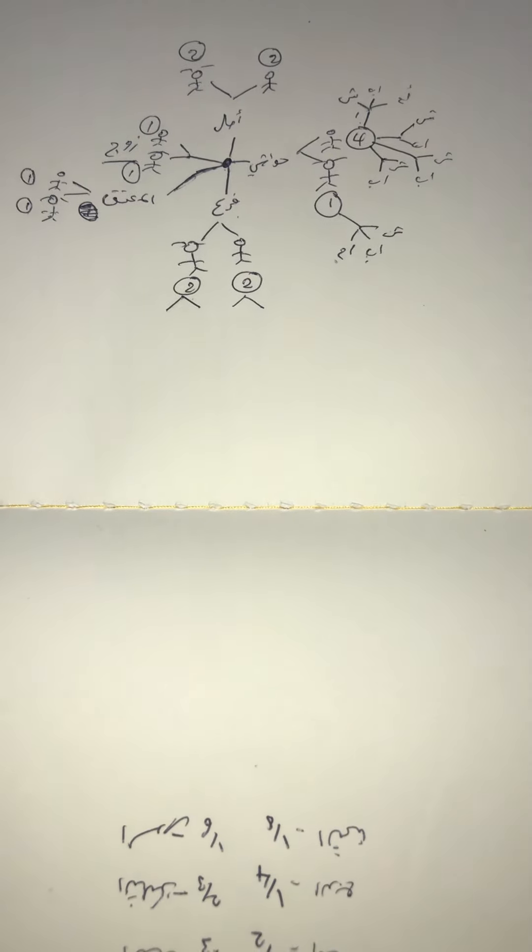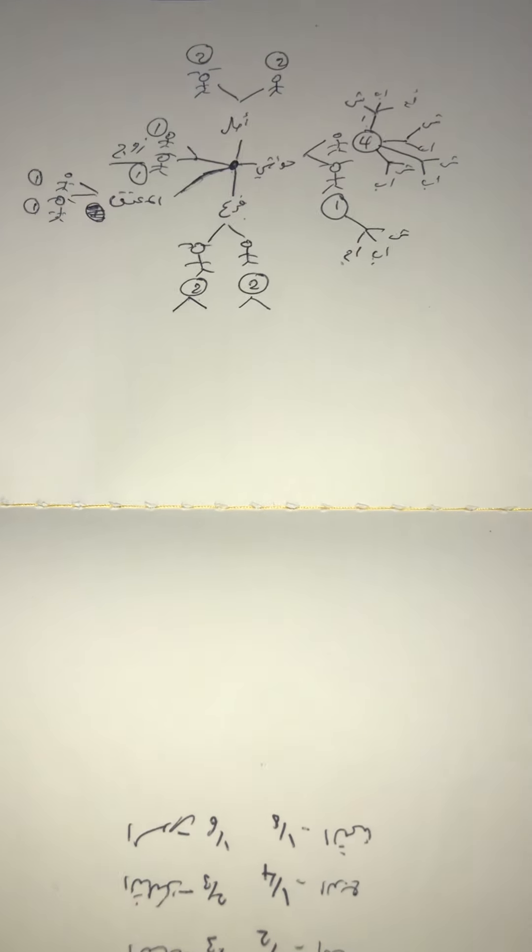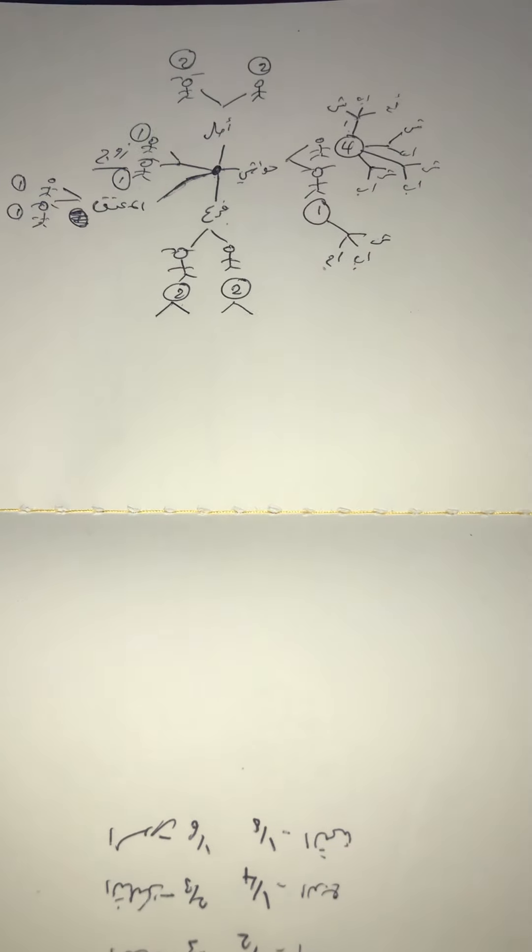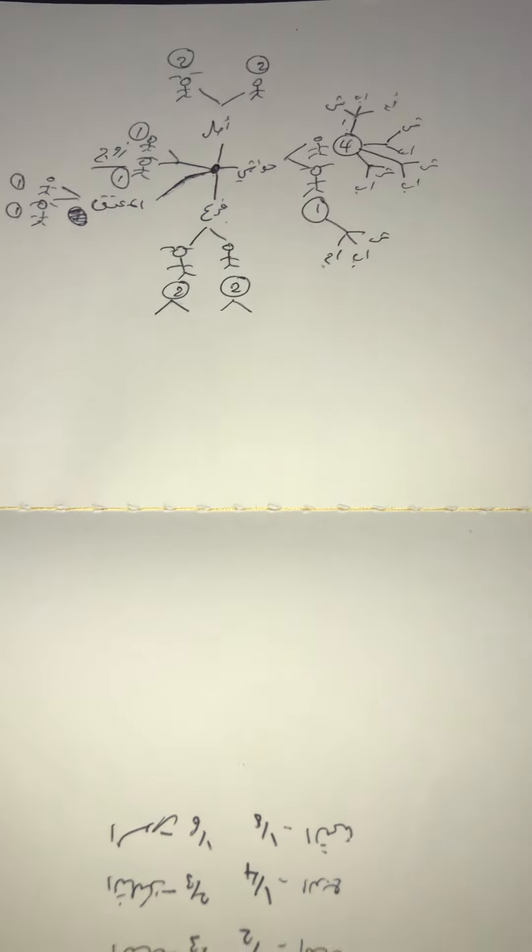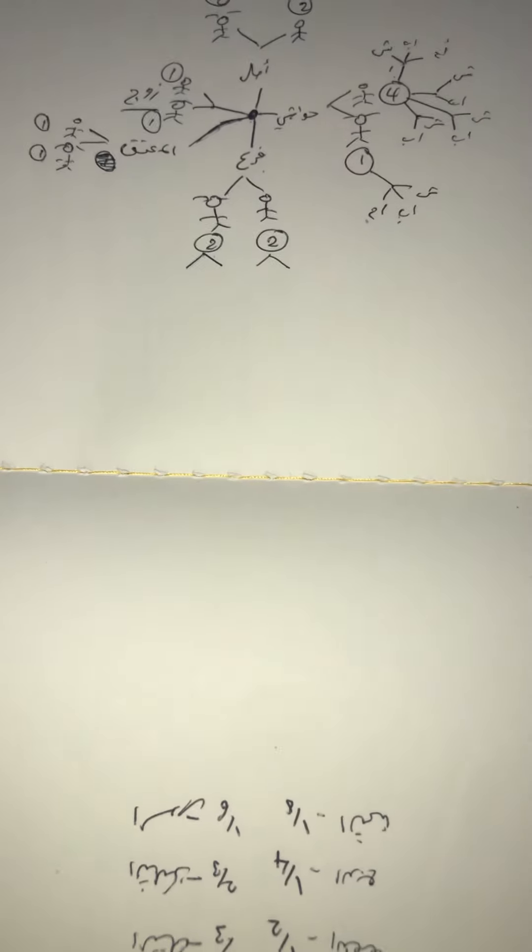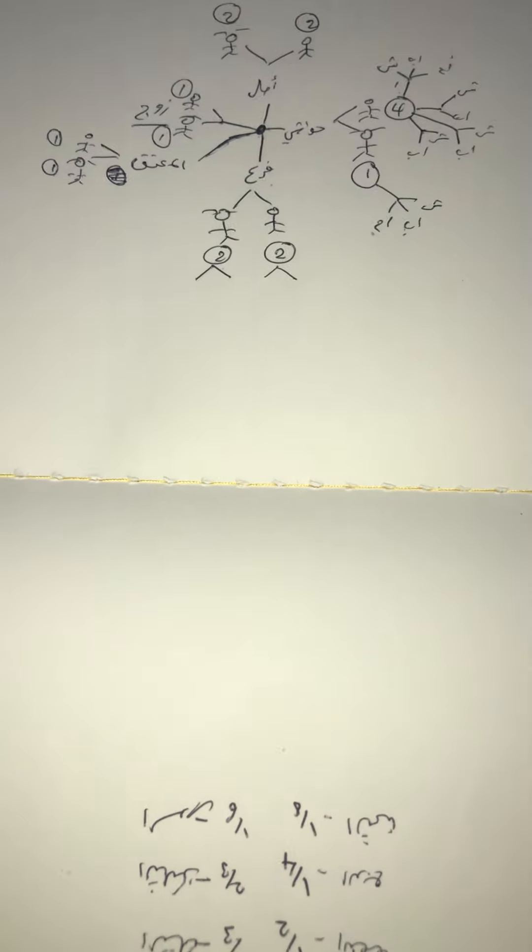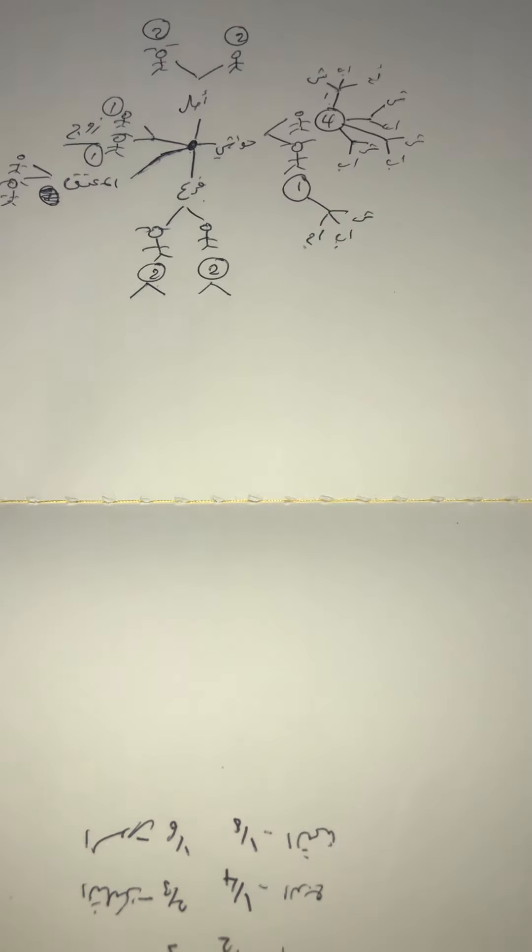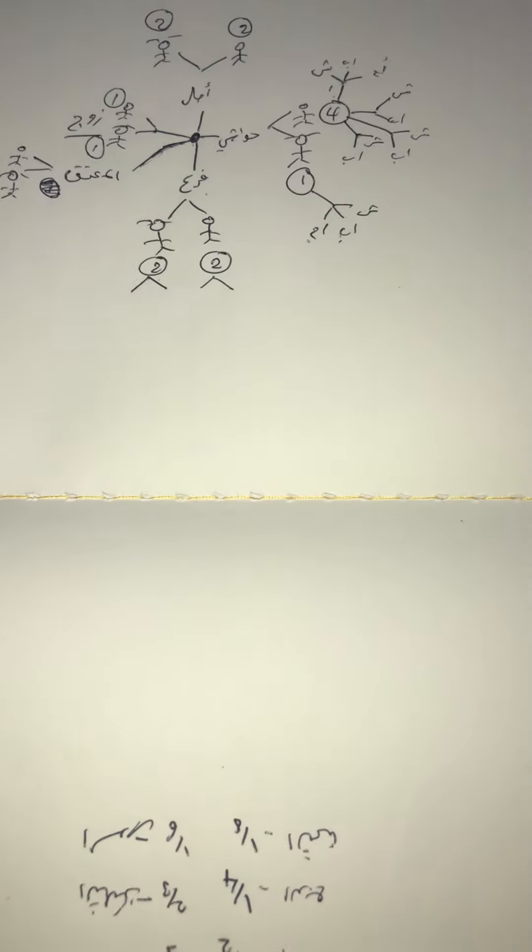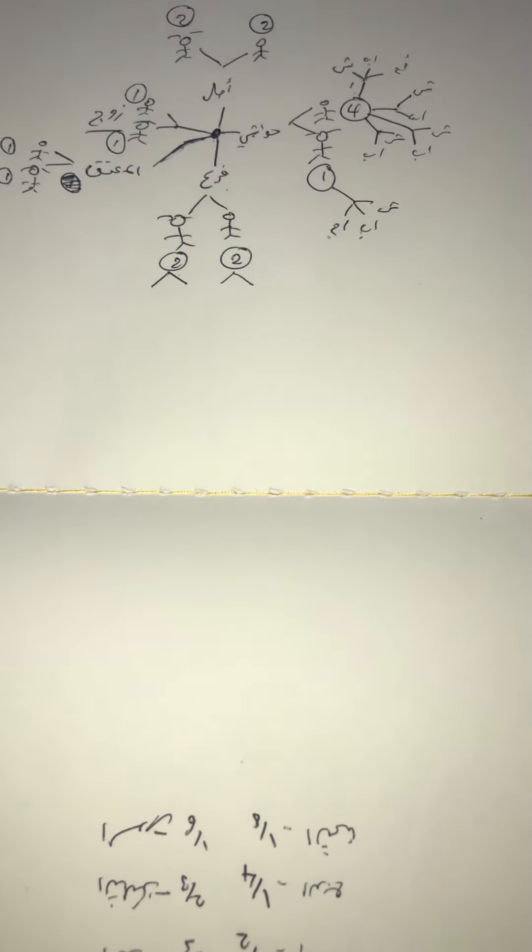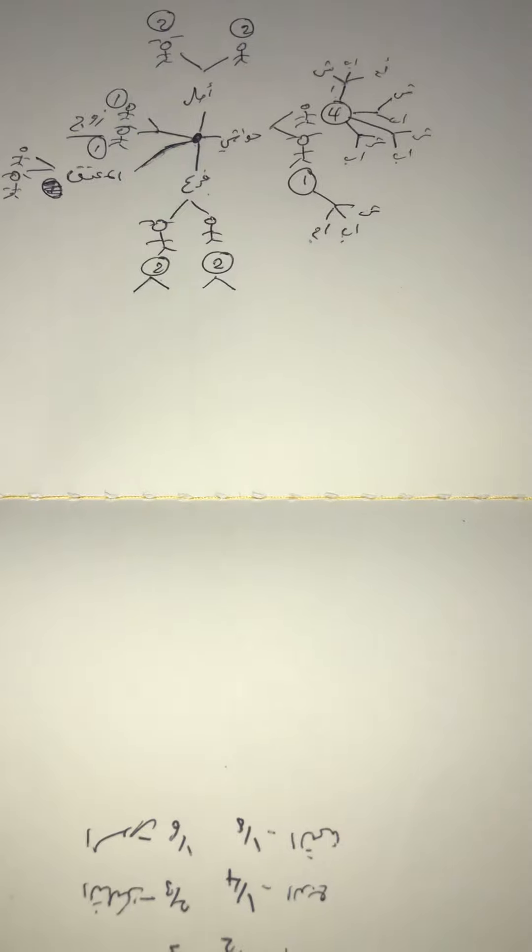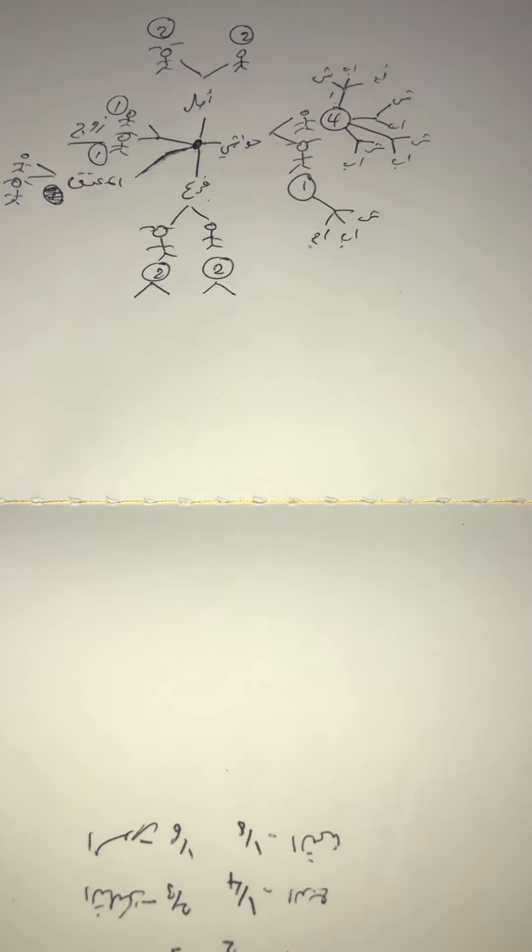The second condition is that there must be multiple awlad, there must be multiple ikhwah min al-um, meaning there must be more than one awlad min al-um for the mayit. So the mayit has essentially more than one ikhwah min al-um. As for the third condition, there must not be an asl warith dhakar present in the equation, so essentially no father and no paternal grandfather. If these three conditions are met then the awlad al-um will earn a third.